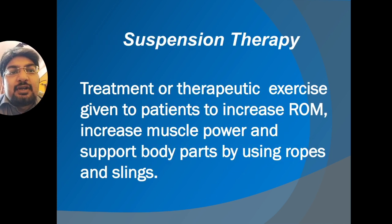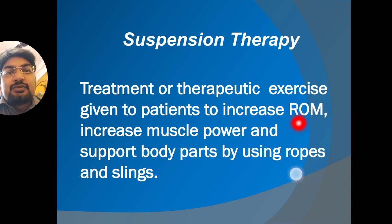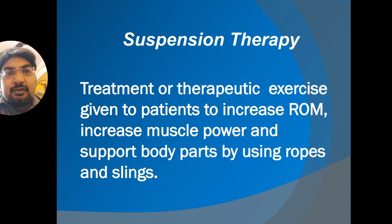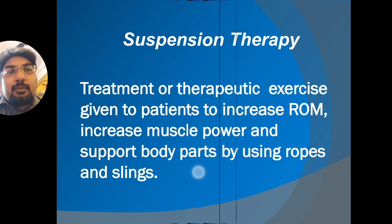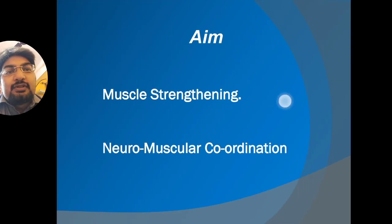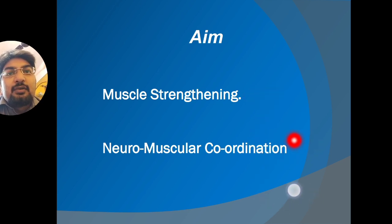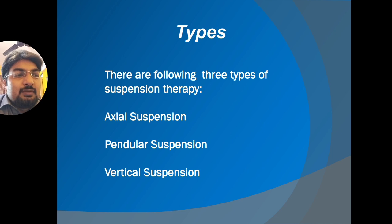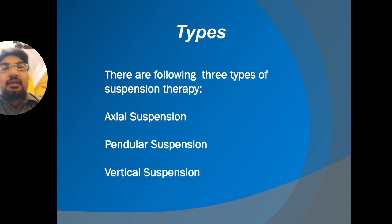Suspension therapy is a therapeutic exercise given to patients to increase or maintain range of motion, increase muscle power, and support body parts using ropes and slings — to avoid pressure sores, usually when the patient is immobile or in a comatose state for prolonged periods. The aim of suspension therapy is to increase muscle strength and improve neuromuscular coordination.